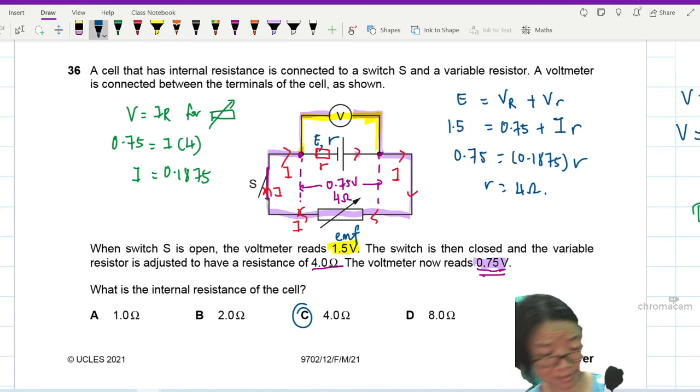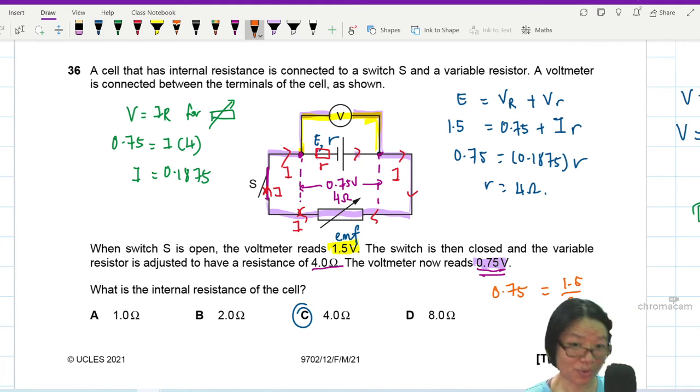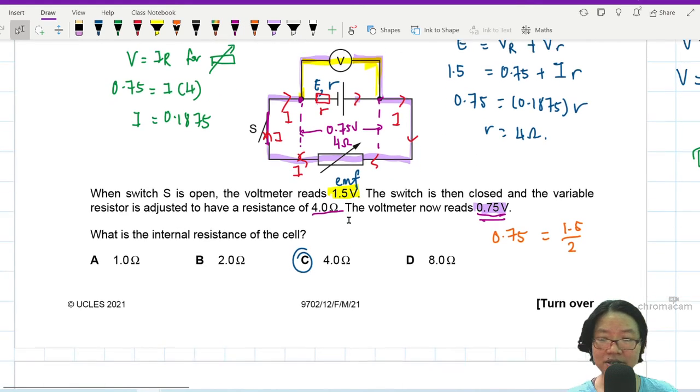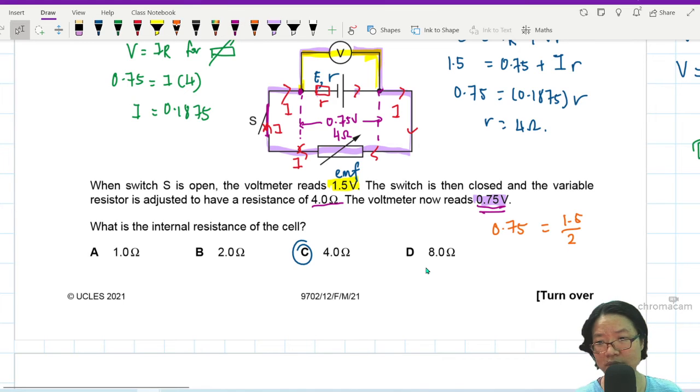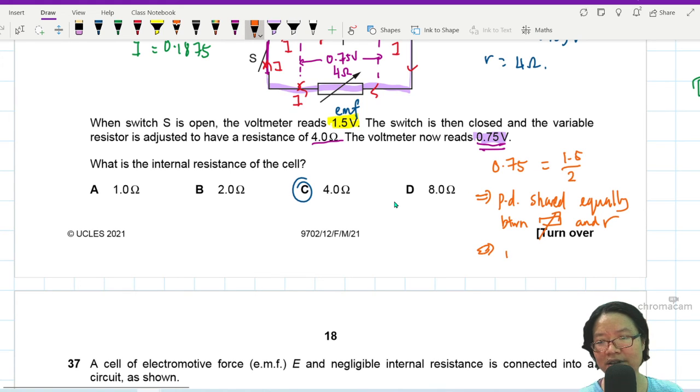There is a shortcut. The shortcut is this: I know that 0.75 is equal to 1.5 divided by 2. So what I'll do is I'll do potential divider method. The 1.5 voltage is shared equally between R and the external resistor. So this one shows that the potential difference is shared equally between the variable resistor and R. So if it's shared equally, it means that the variable resistor is equal to R, which is equal to 4 ohm.